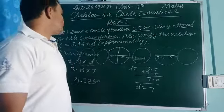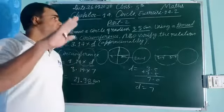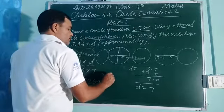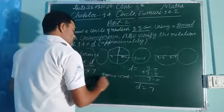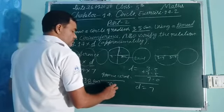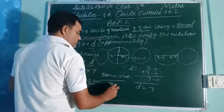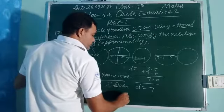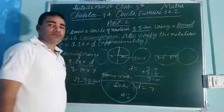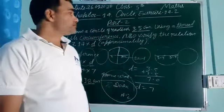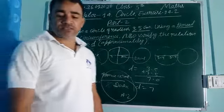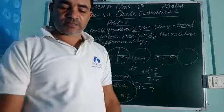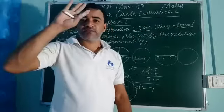Next day I will explain this question. So that's all for today — Jai Hind, Jai Bharat. Homework do — do exercise 14.2. One more video I will make from this exercise; after that this exercise will be finished, means this chapter will also be finished. So that's all for today — Jai Hind, Jai Bharat.